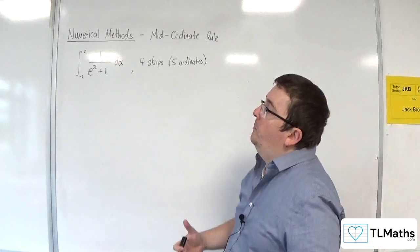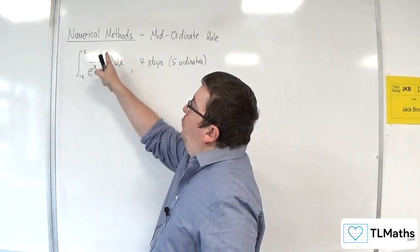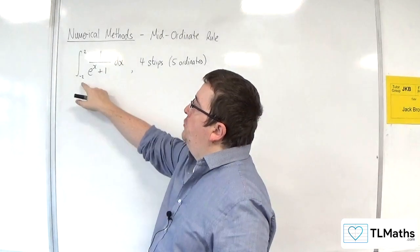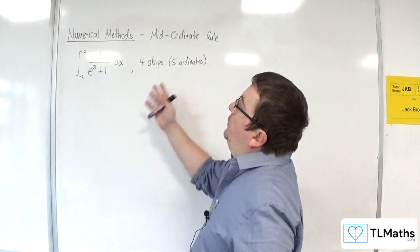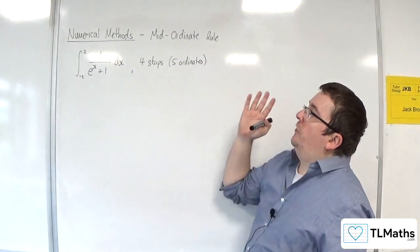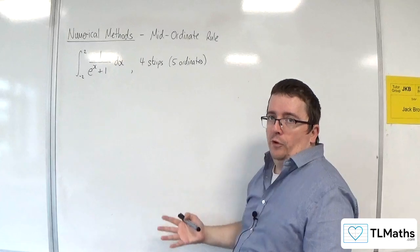In this video, we're going to approximate the value of the integral of 1 over e to the x plus 1, integrated between minus 2 and 2, using the mid-ordinate rule, using 4 strips, or 5 ordinates.